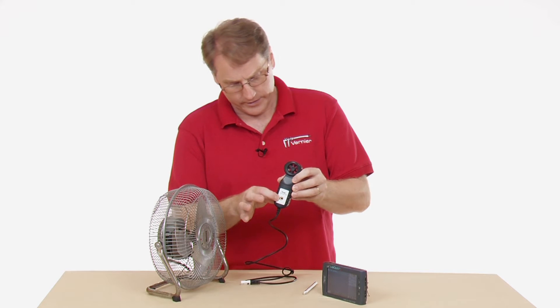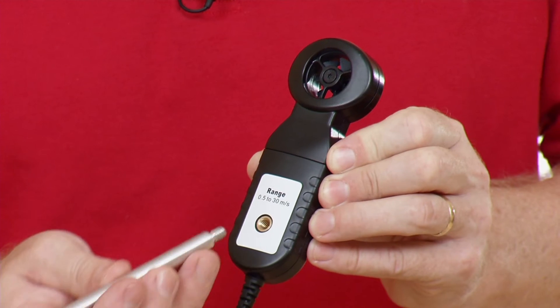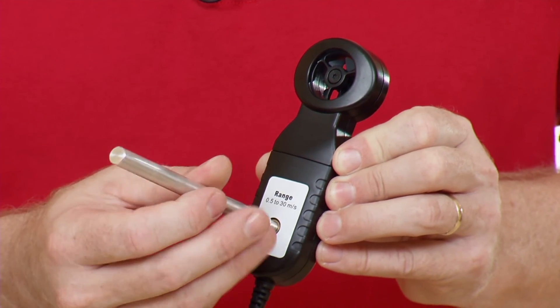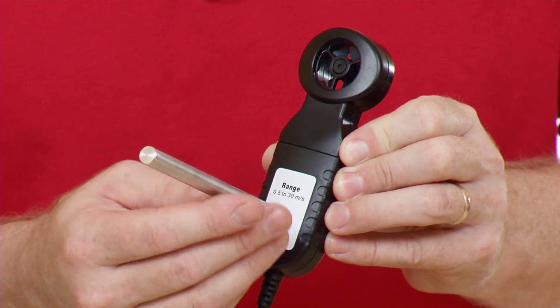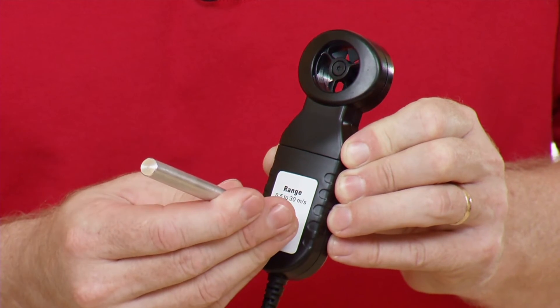This threaded hole here allows me to attach a threaded rod, so I might use this so I could mount it with a clamp if I wanted to actually mount it to something.